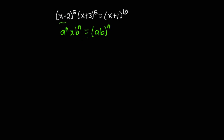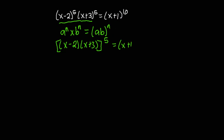So I'm going to use this property to simplify this expression. I'm going to get x minus 2 multiplied by x plus 3, and because they have the same exponents — this is exponent 5 — I'm going to simplify x plus 1 all exponent 10 such that it also has an exponent of 5. So x plus 1 raised to 10 can be written as 2 times 5.